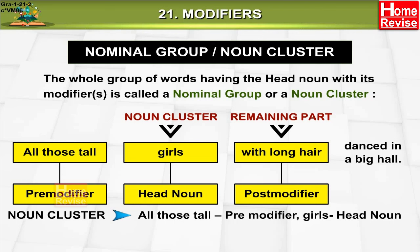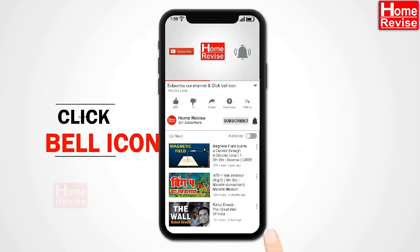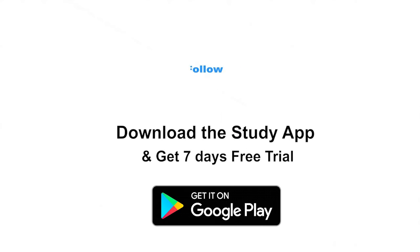Noun cluster breakdown: 'all those tall' — pre-modifier; 'girls' — head noun; 'with long hair danced in a big hall' — remaining part and post-modifier. Please subscribe to my channel and click on the bell icon to get notifications about new videos.